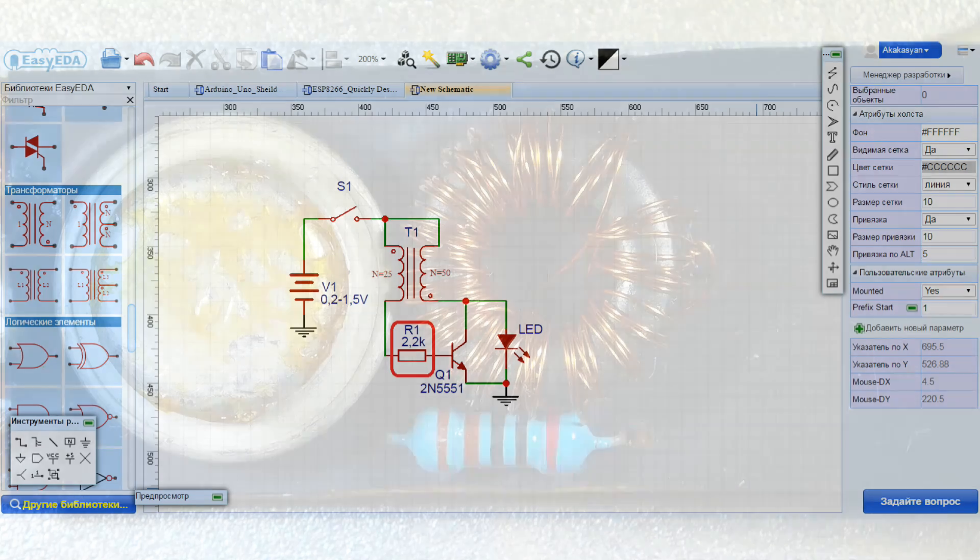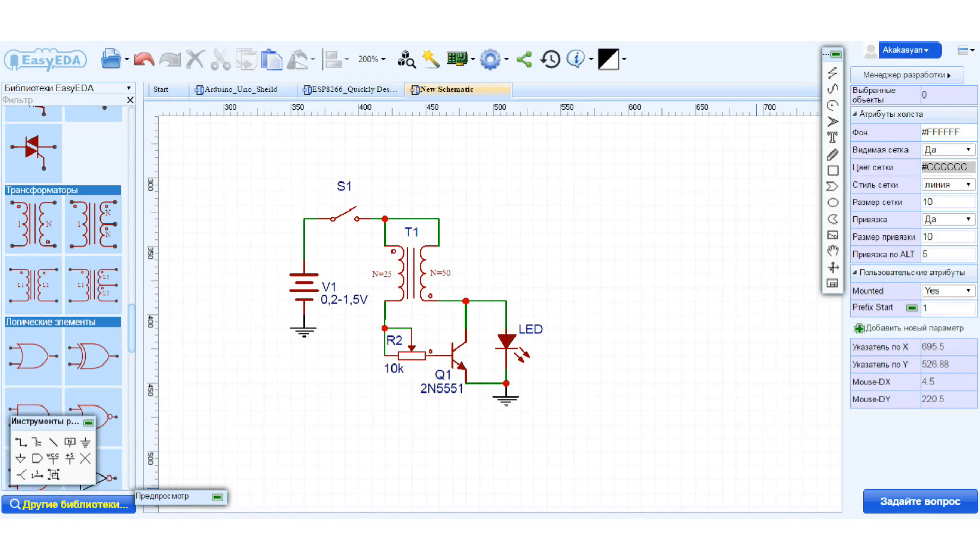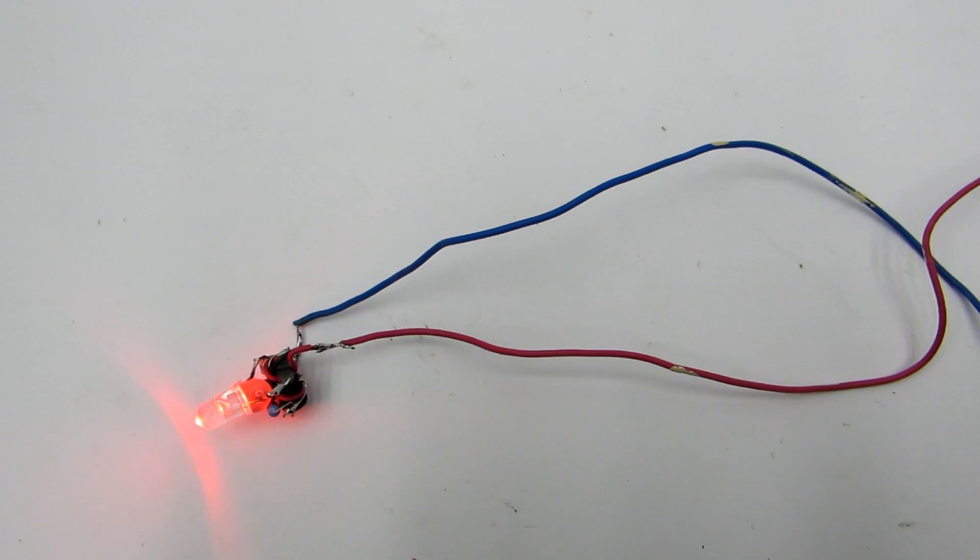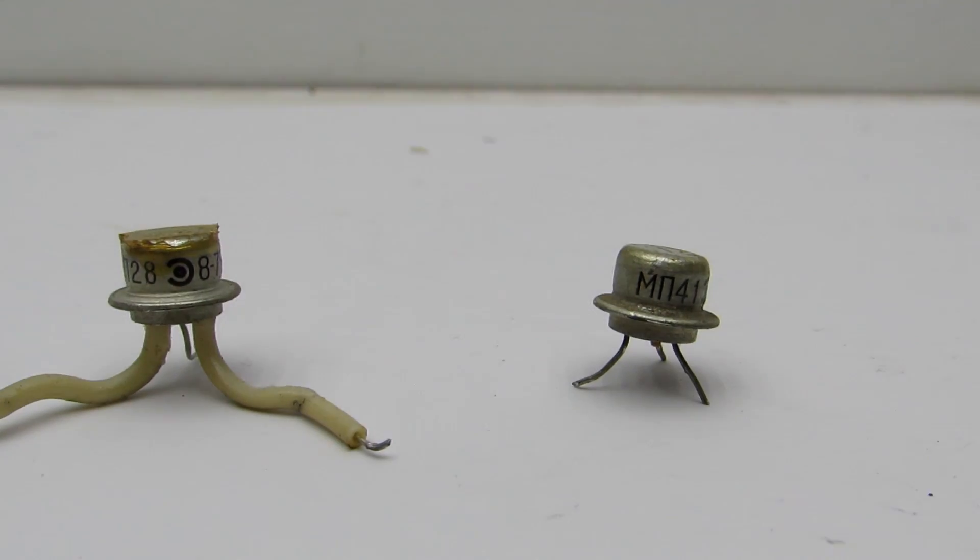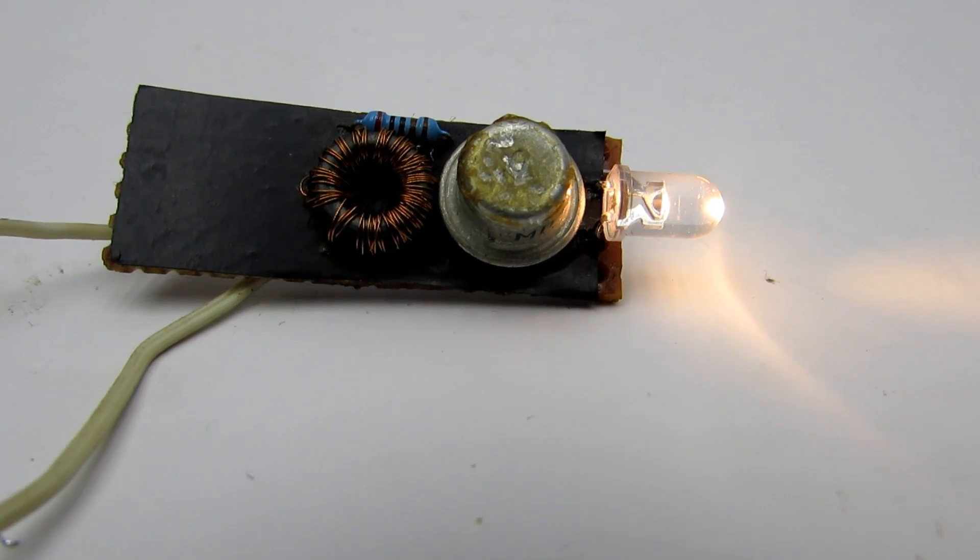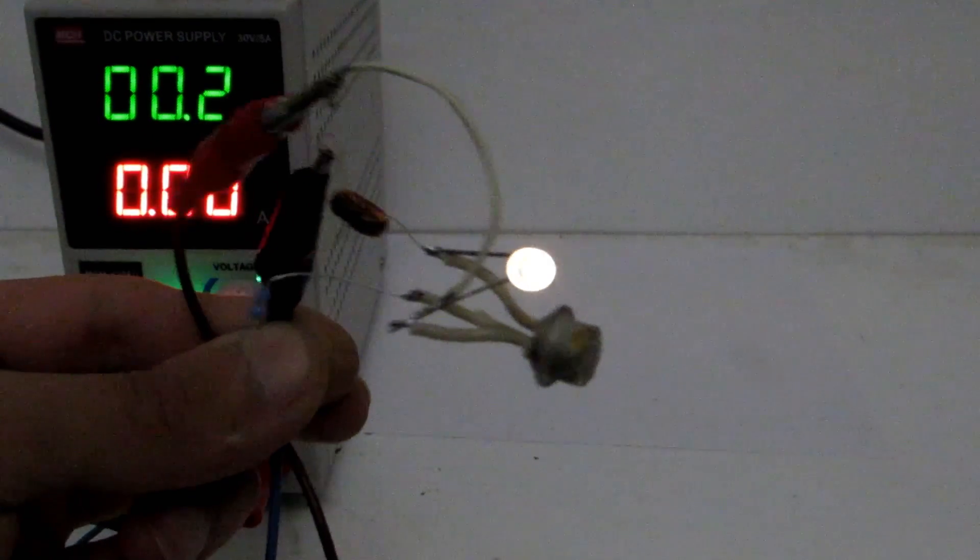Limiting resistor of base can be from 470 ohm to 10 kilo ohm. You can put a variable resistor for adjustment. Working with such components start from 0.6 volts and will continue to work to 0.4 volts. If the silicon transistor will replace with germanium type, this scheme will start work on 0.3 volts and will continue to work until 0.18 volts.